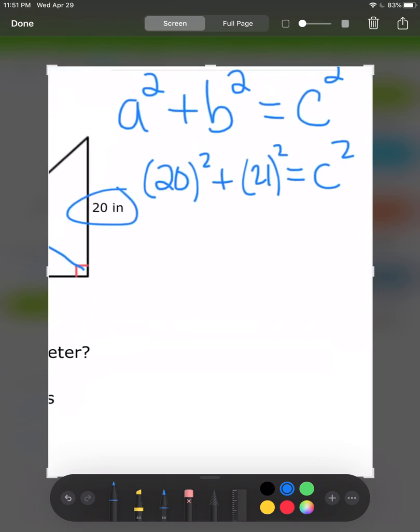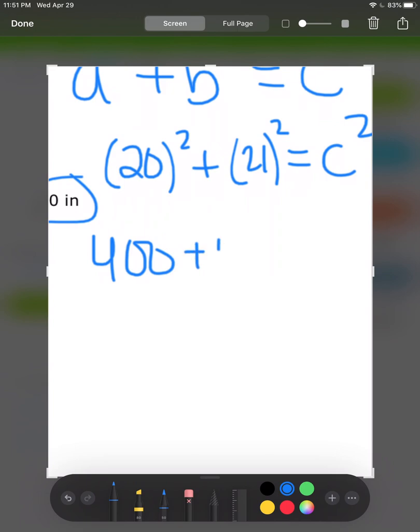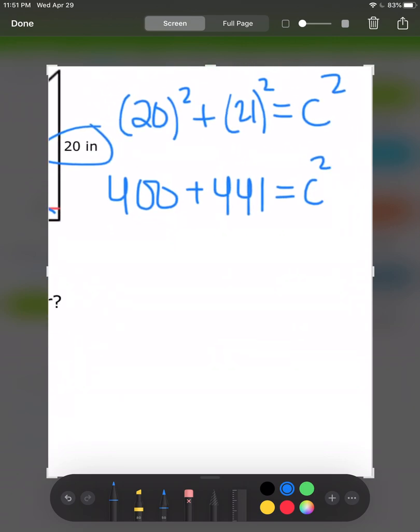In this case, 20 squared is 400. 21 squared, I'm going to use my calculator to make sure I'm doing this correctly, is 441 equals C squared. Let's add those up. 400 plus 441 is 841 equals C squared. Now to get C by itself, the inverse of squaring something is taking the square root.